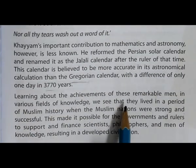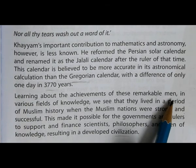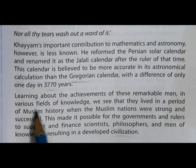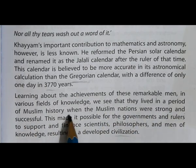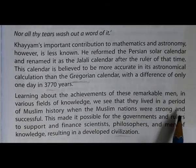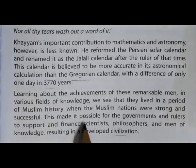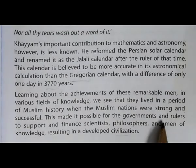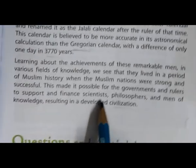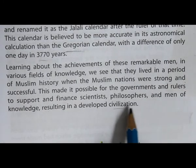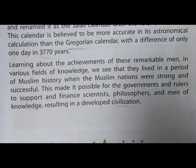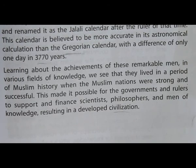Learning about the achievements of these remarkable men in various fields of knowledge, we see that they lived in a period of Muslim history when Muslim nations were strong and successful. This made it possible for governments and rulers to support and finance scientists, philosophers and men of knowledge, resulting in a developed civilization. The period from the 9th century to the 15th century was the golden period for the Muslim world.